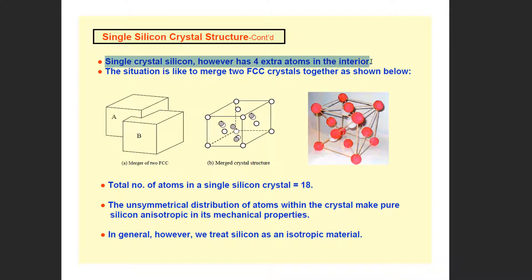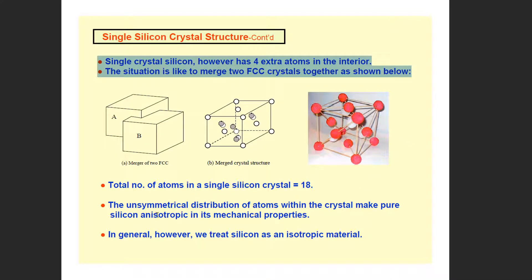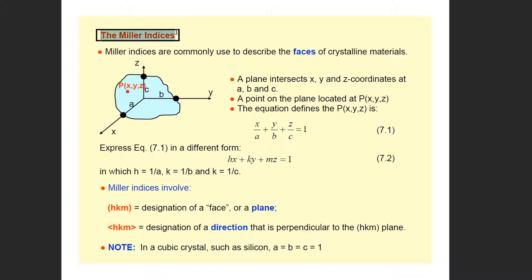A silicon structure has 4 extra atoms inside the unit cell, which are shared among the 4 atoms. In general, however, we treat silicon as an isotropic material.